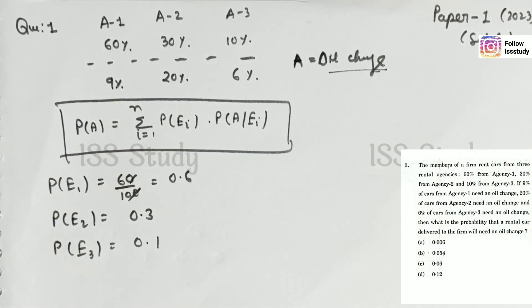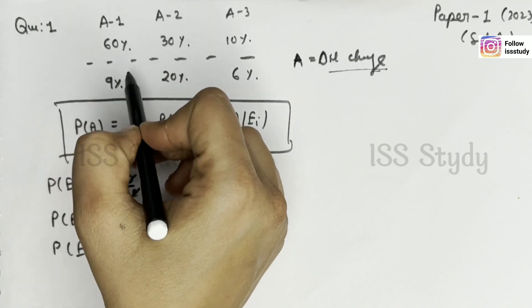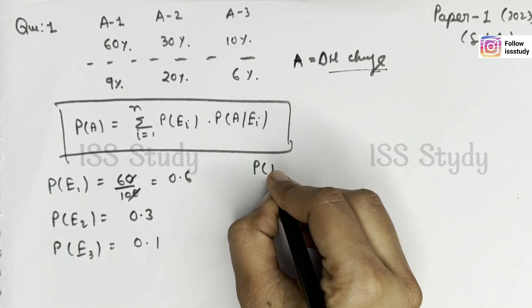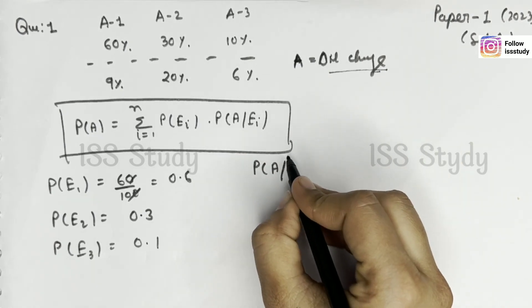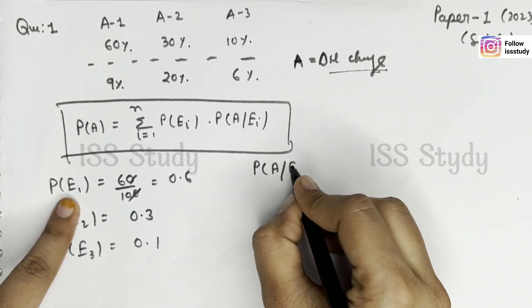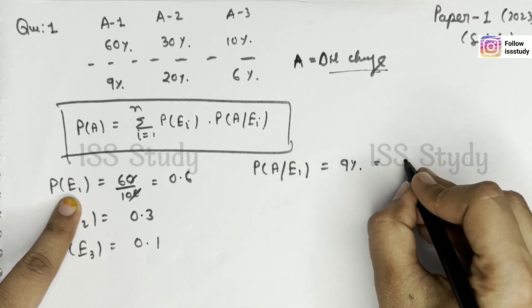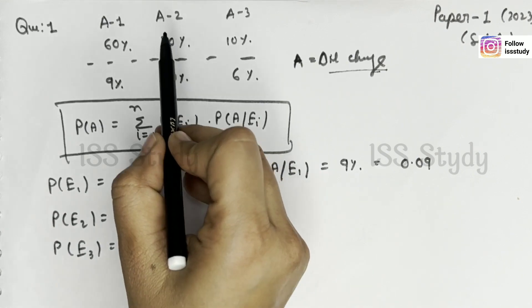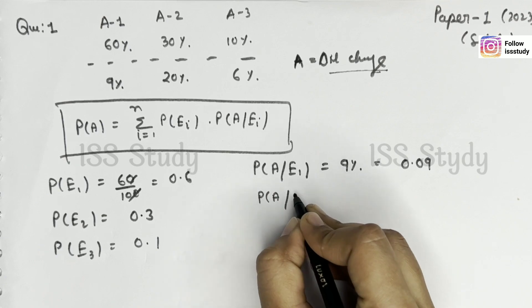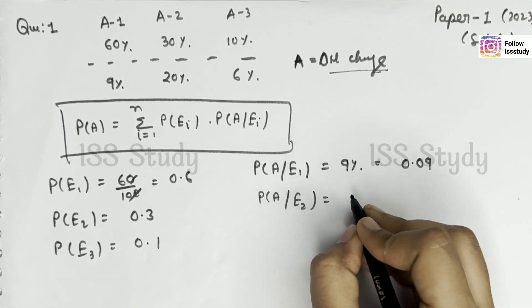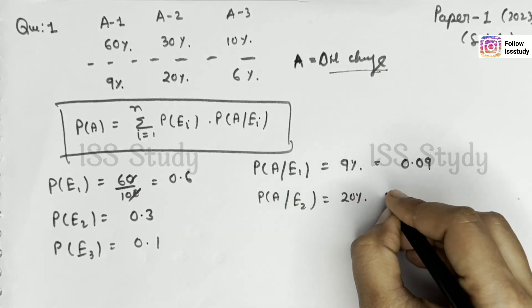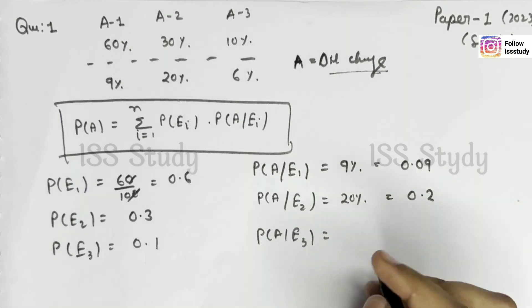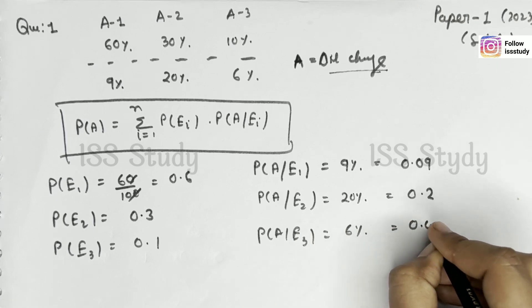Now, it says 9% of the cars from agency 1 need an oil change. Oil change and agency 1 — so the probability that a car needs an oil change given it belongs to agency 1 is P(A|E1) = 9%, which means 0.09. Similarly, 20% of cars from agency 2 need an oil change, so P(A|E2) = 0.2. And P(A|E3) for the last agency is given as 6%, that means 0.06. So we have decoded this question.